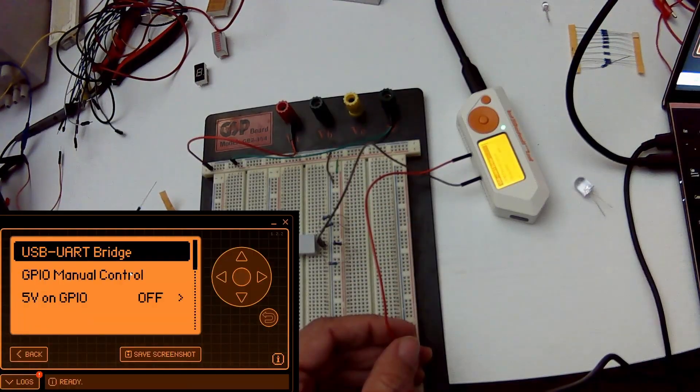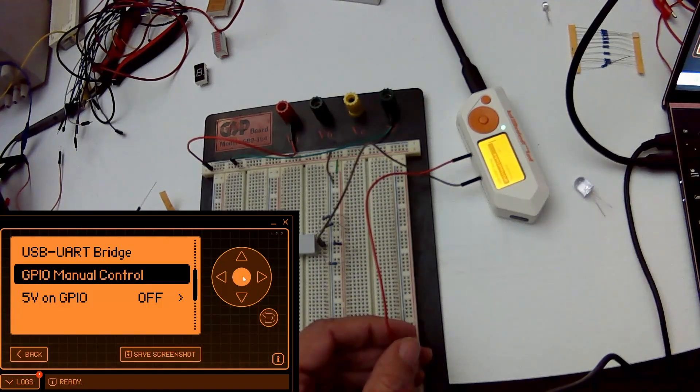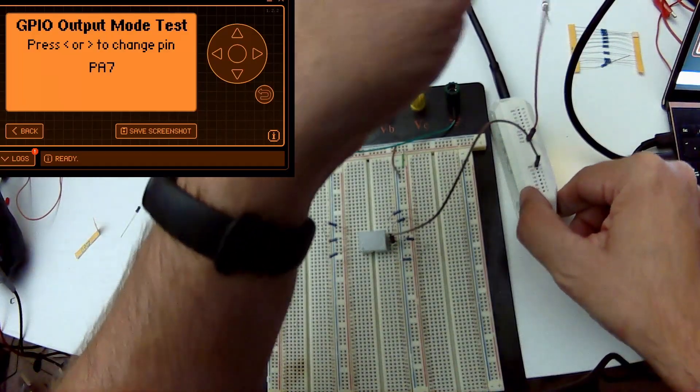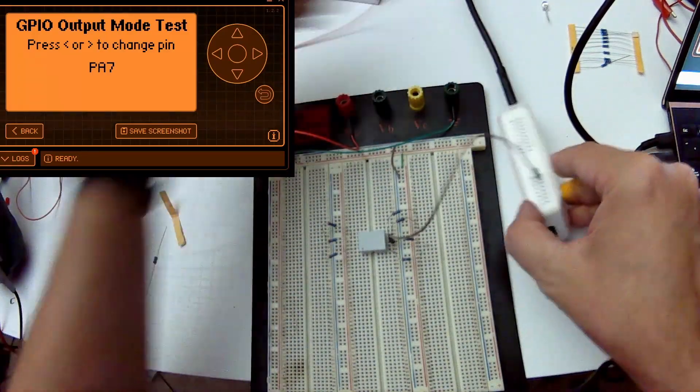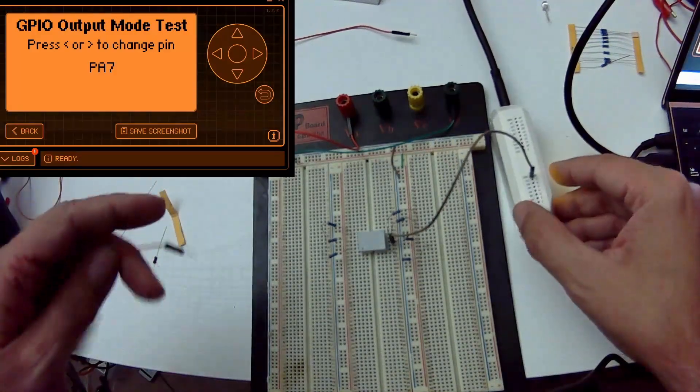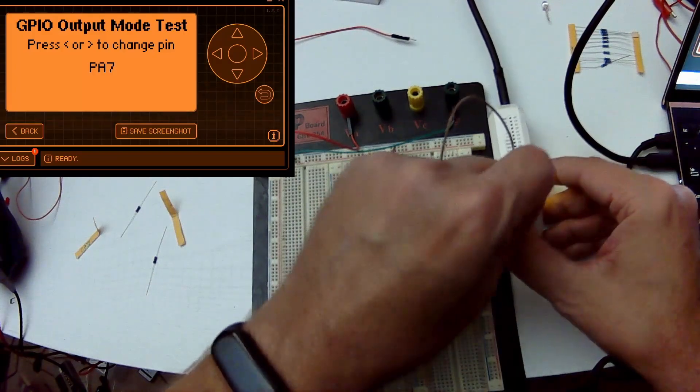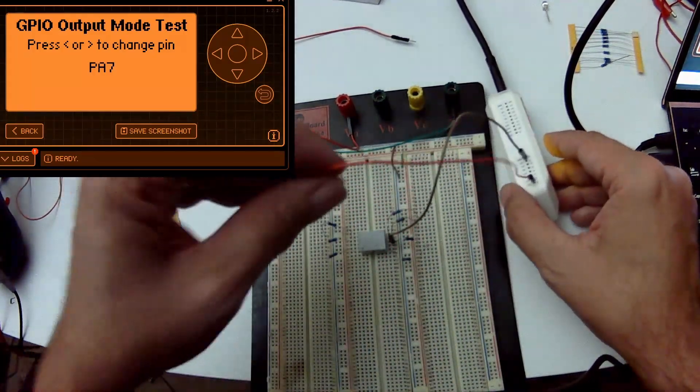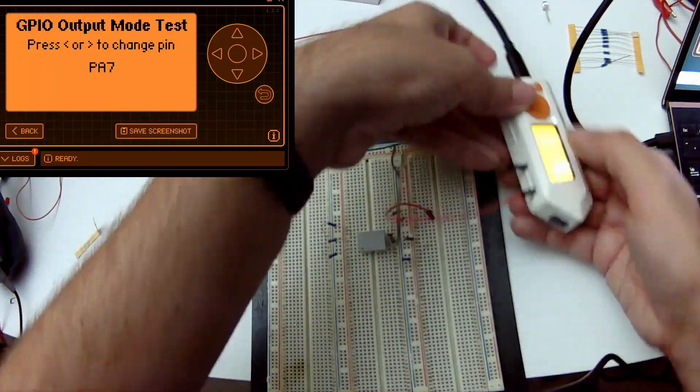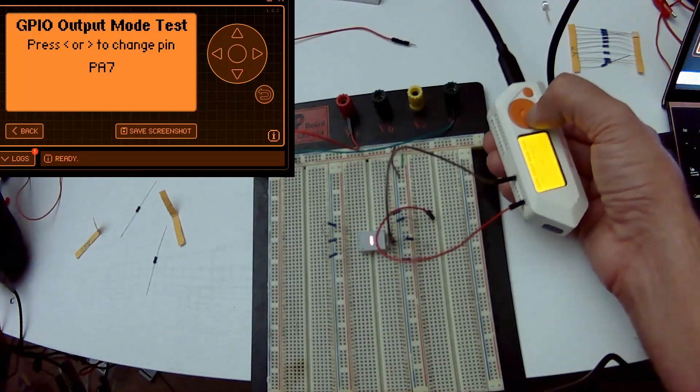On our flipper, we're going to go to GPIO and then down to GPIO manual control. It's saying pin A7 is where it's going to output the voltage. So we'll disconnect that 3.3 volt wire and connect the pin into the one labeled A7. Then we'll connect this end to the other side of our resistor. Now when we press the OK button, the segment should turn on and when we release it, it should turn off.